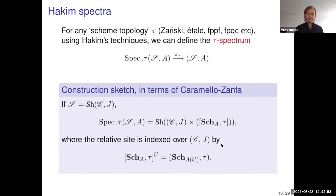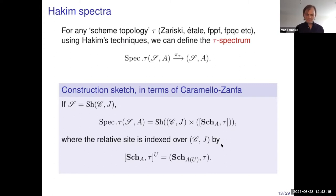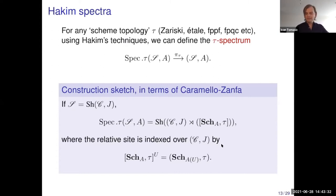Moreover, for any scheme topology tau — which may include Zariski, étale, flat, etc. — using Hakim's techniques, you can define the tau-spectrum, denoted Spec_tau, which is a tau-locally ringed topos with a structure map to the original ringed topos. There is a beautiful connection to Olivia's lectures on relative toposes from last week, and her forthcoming work with Ricardo on relative toposes. I will attempt to give a sketch of that construction in terms of this forthcoming work.